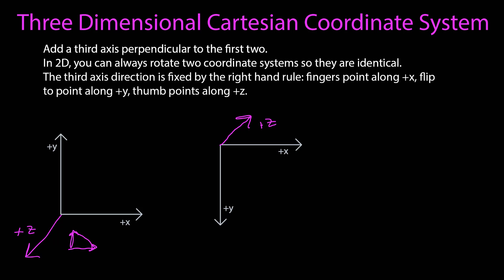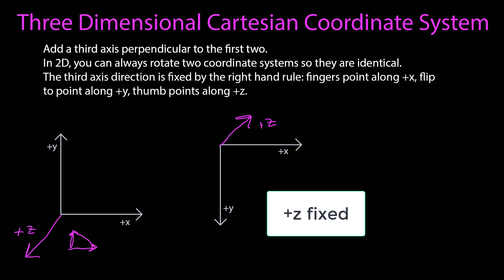You can choose positive x and positive y to be any direction you want. But once you've chosen those, the positive z direction is fixed by the right-hand rule.